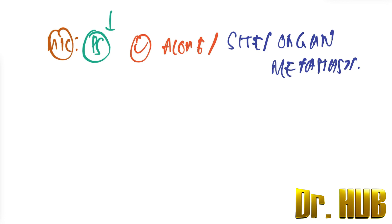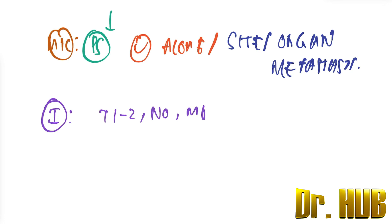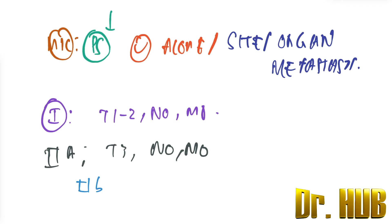Now let us look at the stages, strictly as per the AJCC 7th edition. Stage 1 is T1 to T2, N0, M0. Stage 2A is T3, N0, M0. Stage 2B is T4, N0, M0.